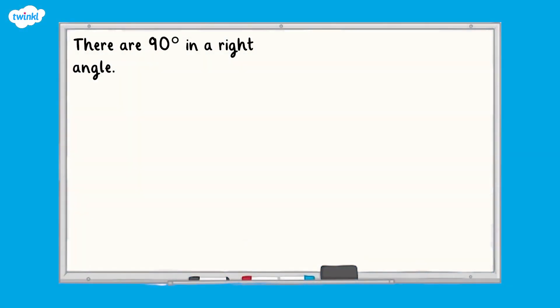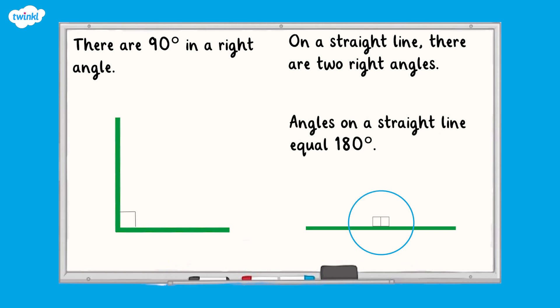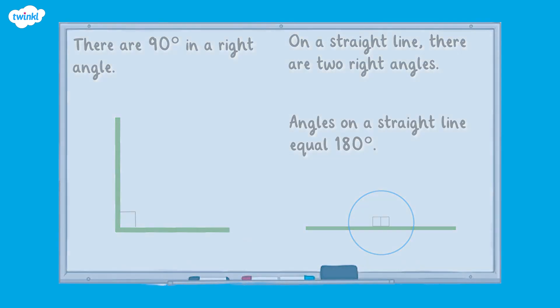There are 90 degrees in a right angle, marked by two straight lines on a corner. On a straight line there are two right angles, which means that the angles on a straight line equal 180 degrees. If you'd like any more help with classifying different types of angles, then take a look at our angles facts video.